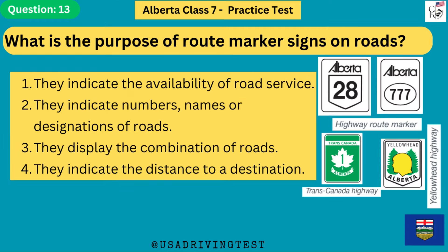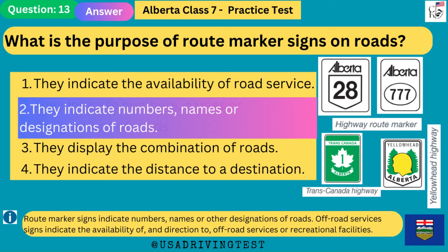What is the purpose of route marker signs on roads? 1. They indicate the availability of road service. 2. They indicate numbers, names or designations of roads. 3. They display the combination of roads. 4. They indicate the distance to a destination. The answer is 2: they indicate numbers, names or designations of roads. Route marker signs indicate numbers, names or other designations of roads. Off-road services signs indicate the availability of, and direction to, off-road services or recreational facilities.